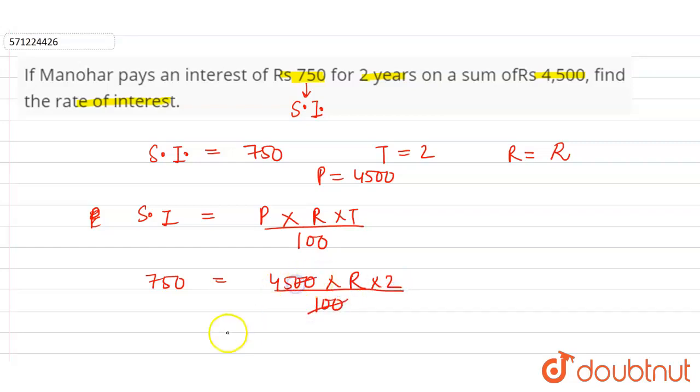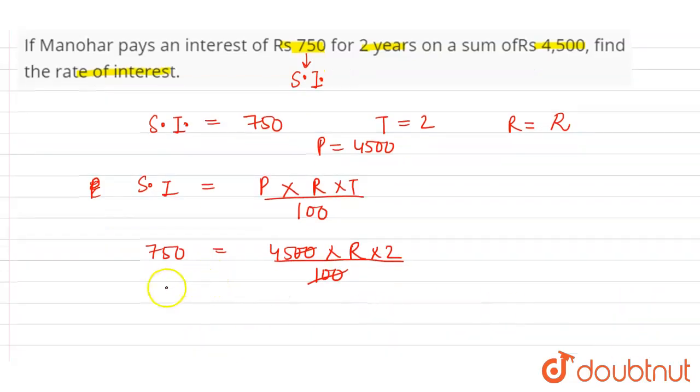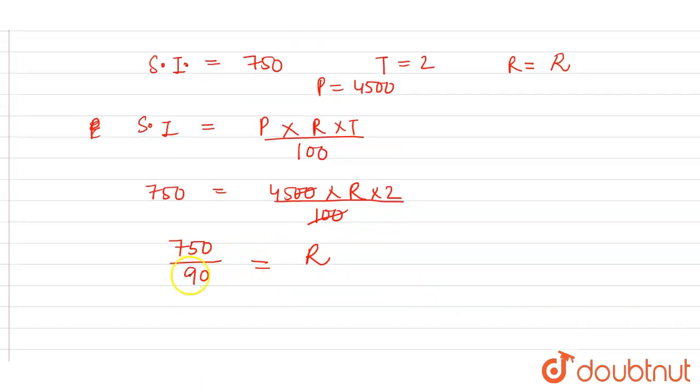This is equal to 750, right? 750 divide and this is 45 into 2 is 90. So divide 45 into 2, that is 90, to find the rate of interest. So this is equal to, zero will be cancelled. So rate of interest in fraction will be 75 divided by 9.